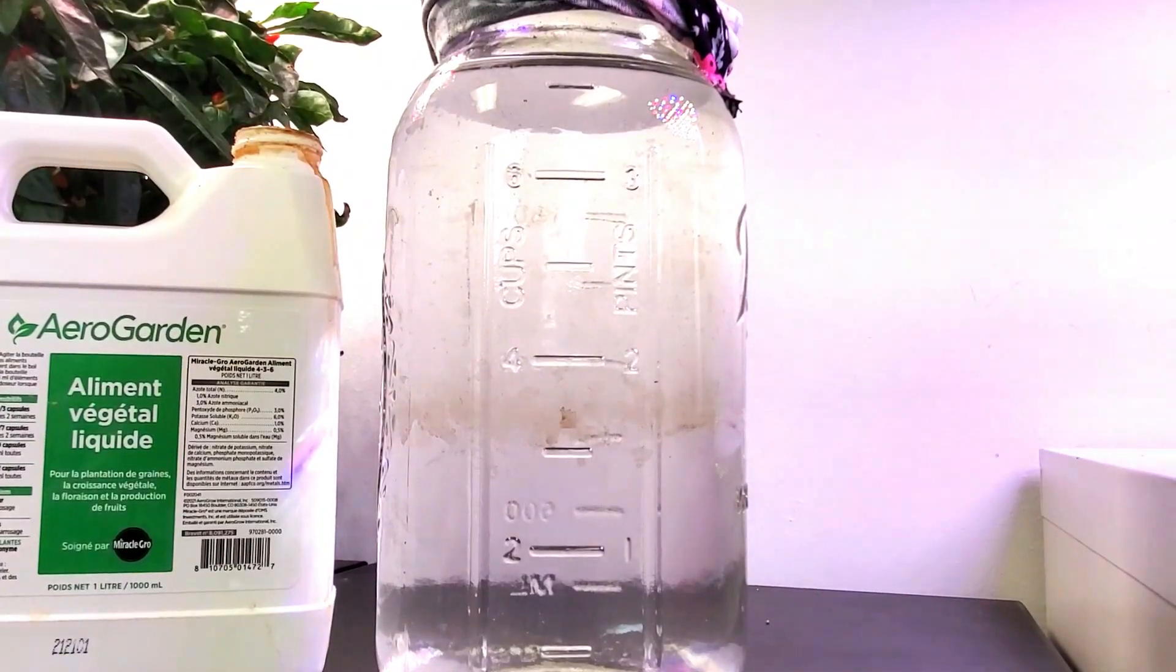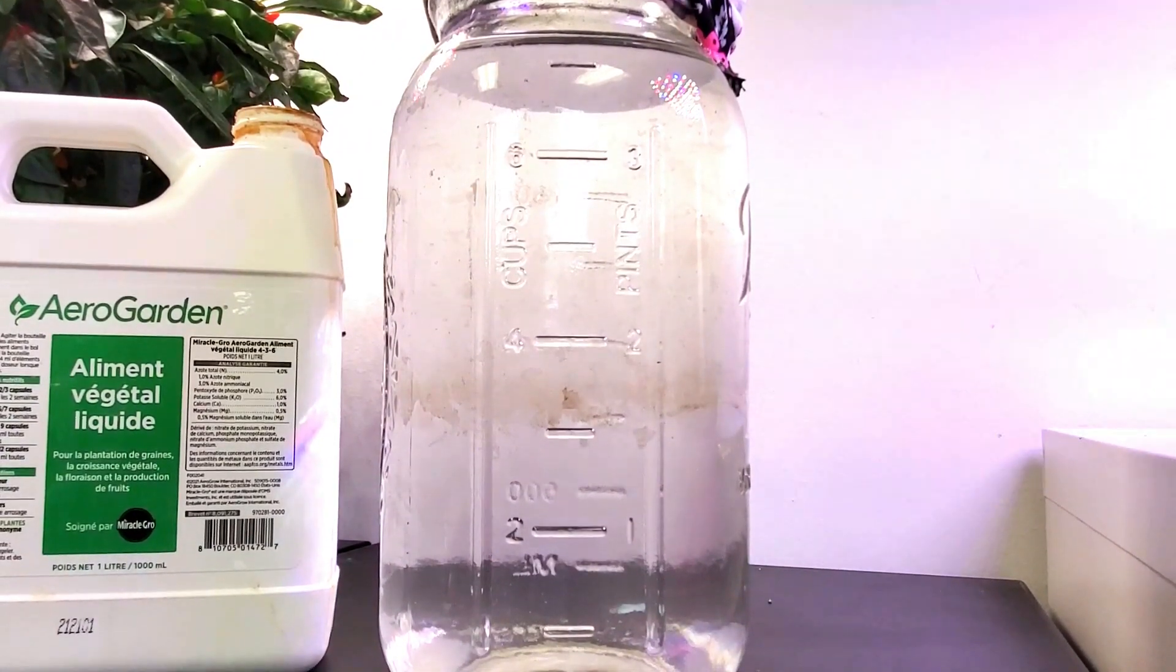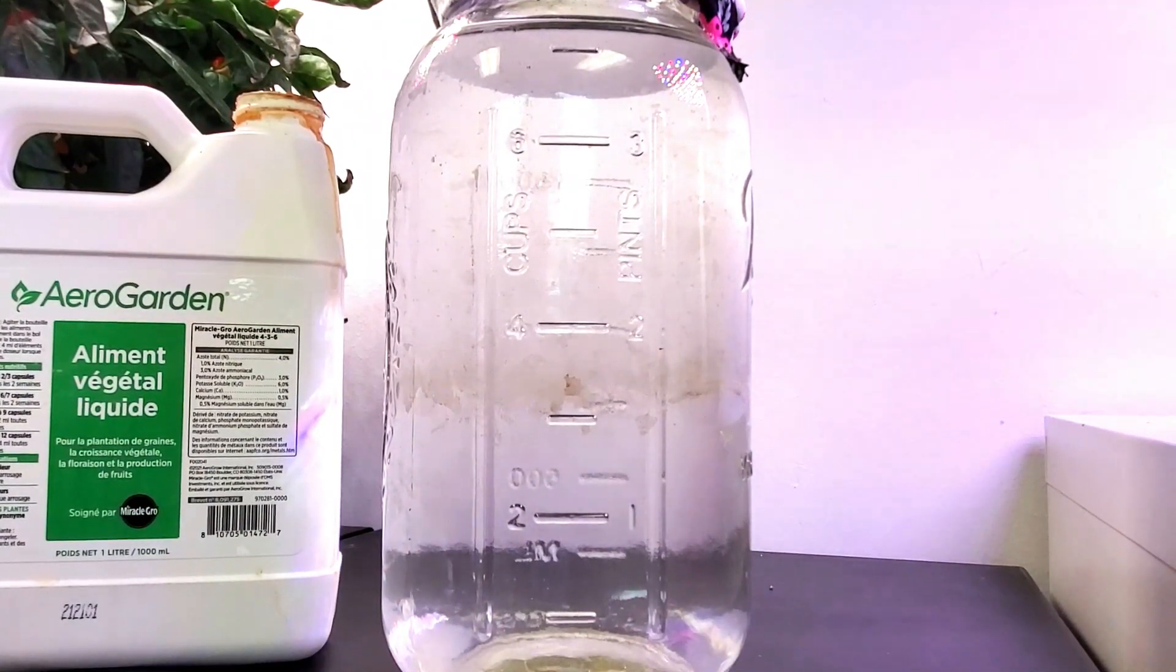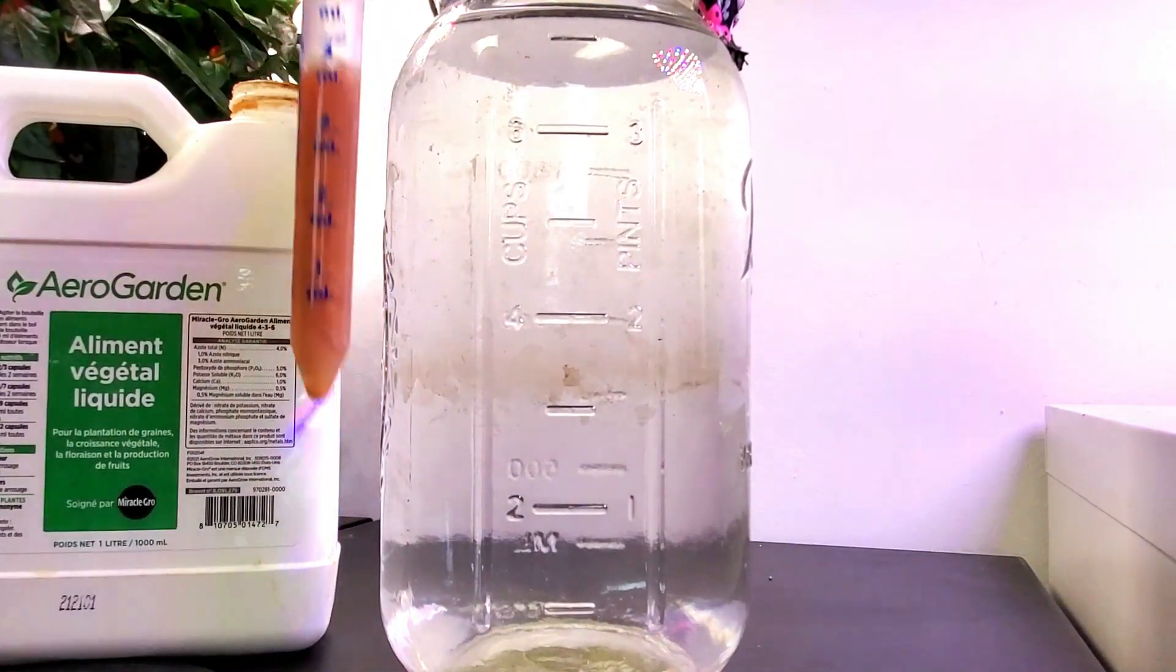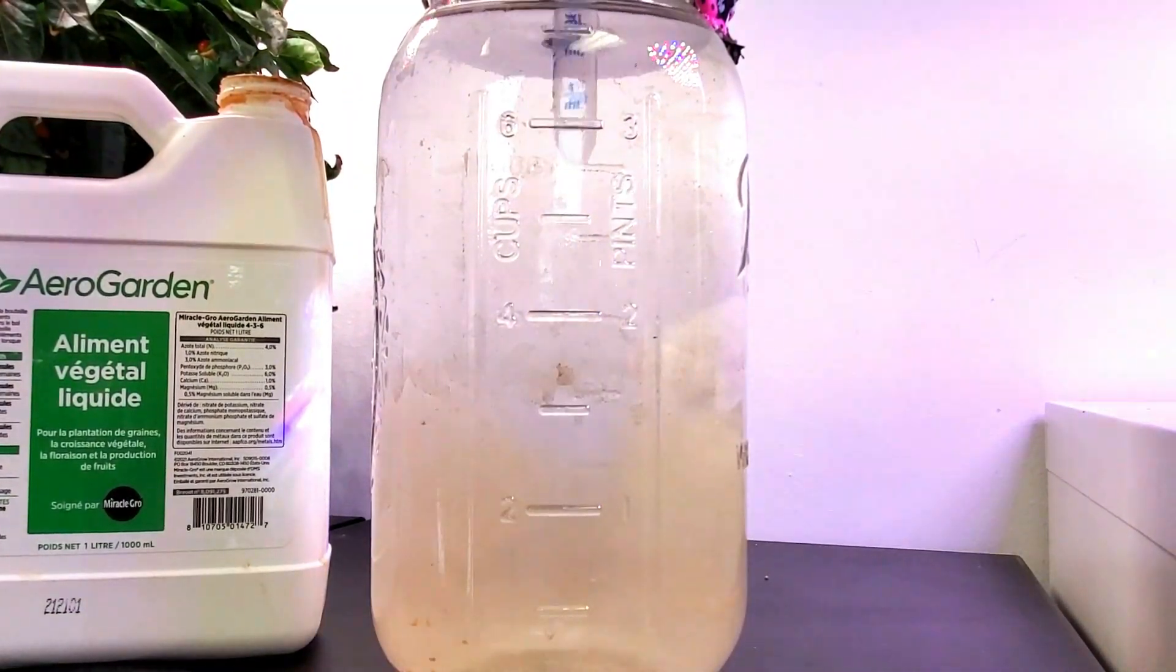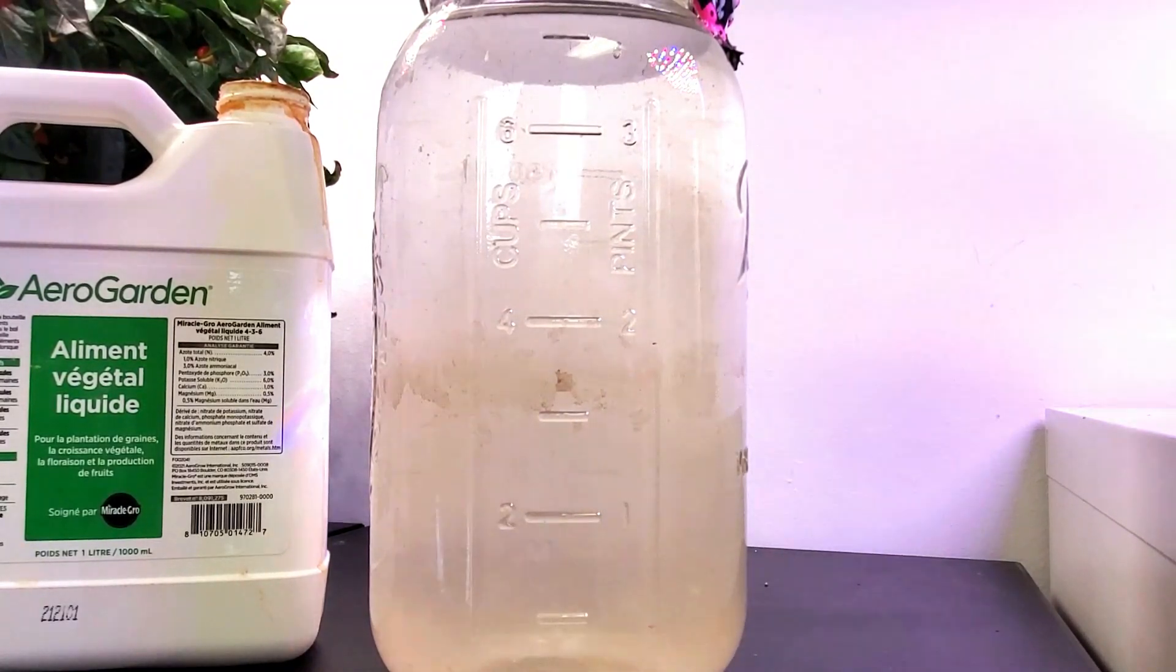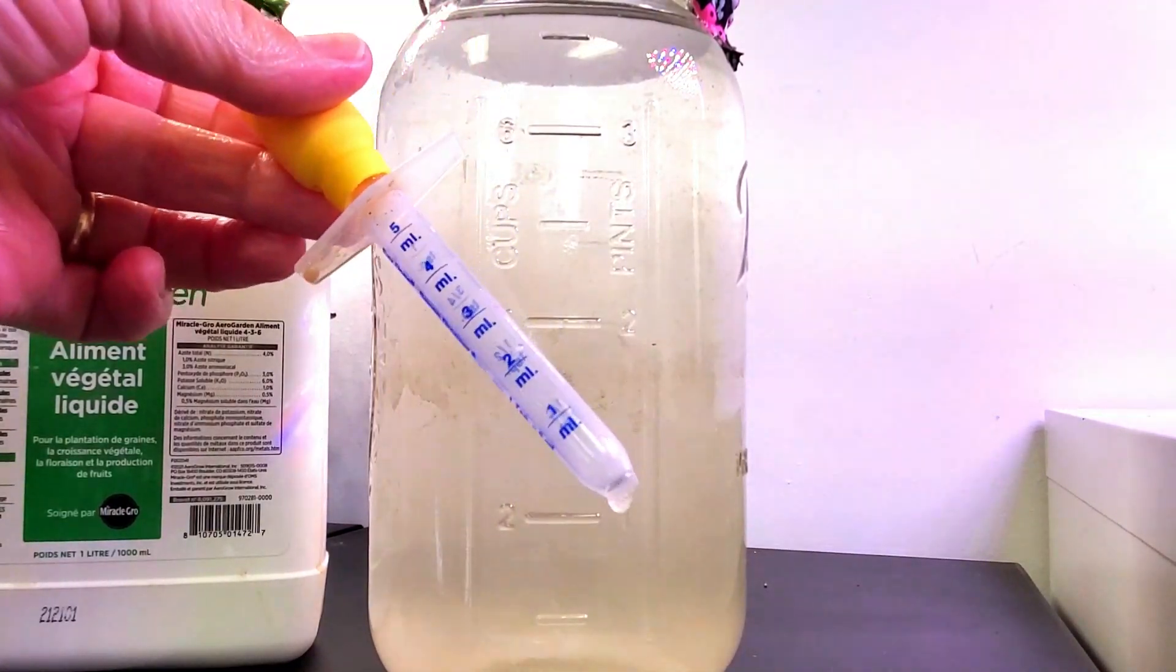I'll be using AeroGarden nutrients, and since a half-gallon jar is similar to an AeroGarden Sprout, I can use the same measurements. Four milliliters of their nutrients should be enough. I'm going to drop that in and give it an extra squeeze or two to make sure the nutrients go in, which also helps clean out the dropper.